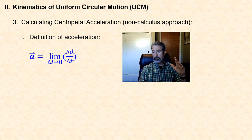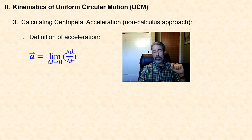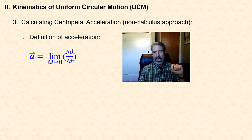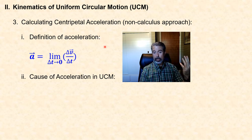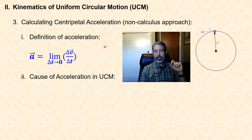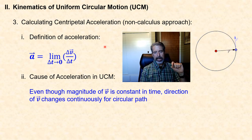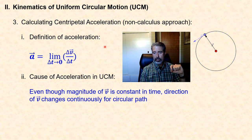The average acceleration is simply the change in velocity divided by the change in time, and the instantaneous acceleration is the limit of the average acceleration as that time interval gets infinitesimally small. This tells us that we get an acceleration any time the velocity changes, for whatever reason. For uniform circular motion, even though the magnitude of the velocity does not change — the speed is constant — because the direction of the velocity continuously changes, this directional change causes the acceleration.